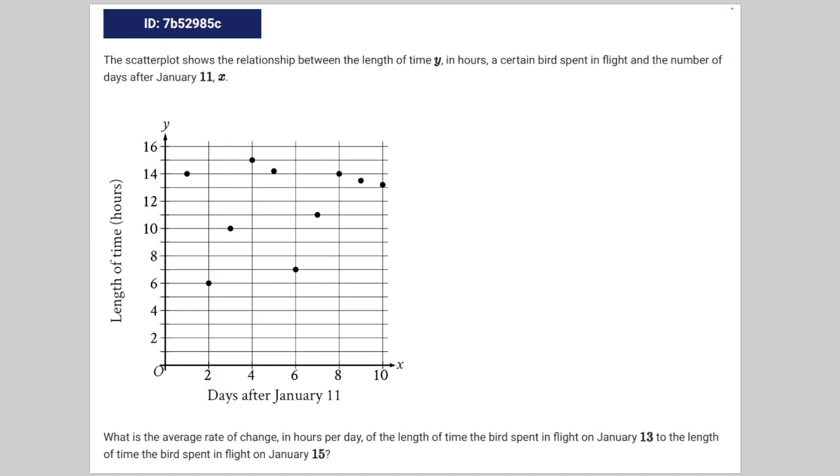So we're given the following math problem. The scatterplot shows the relationship between the length of time y in hours a certain bird spent in flight and the number of days after January 11th x. What is the average rate of change in hours per day of the length of time the bird spent in flight on January 13th to the length of time the bird spent in flight on January 15th?